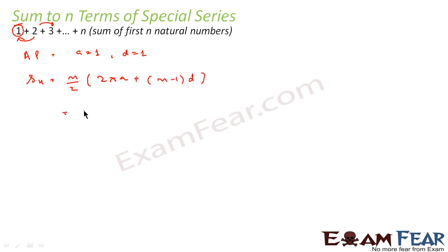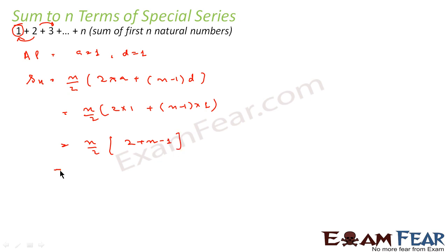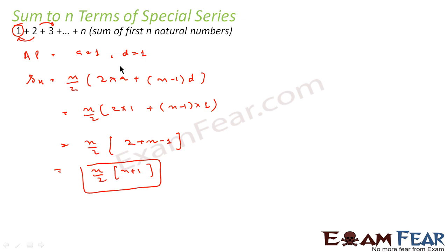Putting in the values of a and d: Sn = (n/2)[2×1 + (n−1)×1] = (n/2)[2 + n − 1] = (n/2)(n + 1). Since this series comes up very often, it is better to memorize the value directly. The sum of first n natural numbers is n(n+1)/2.